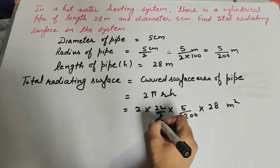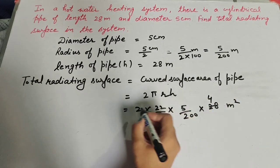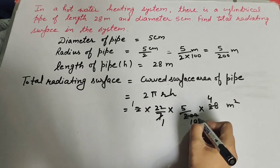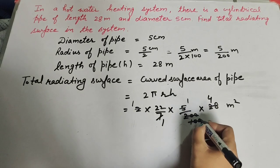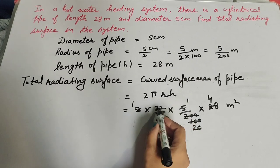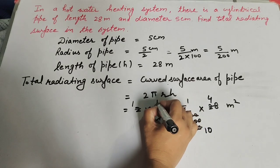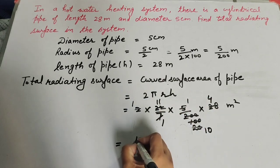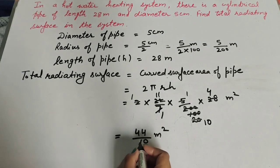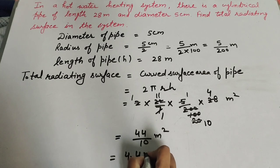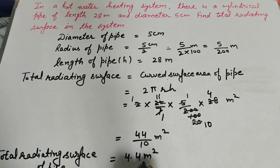Now 7 and 28 both cancel on the table of 7, and 2 and 200 are both divisible by 2 so we cancel them. Then 5 and 100 cancel on the table of 5, and 22 and 20 cancel on the table of 2. Now it is equal to 11 multiplied by 4, giving 44 over 10 meters square. 44 divided by 10 gives 4.4 meters square. So the total radiating surface of the pipe is 4.4 meters square.